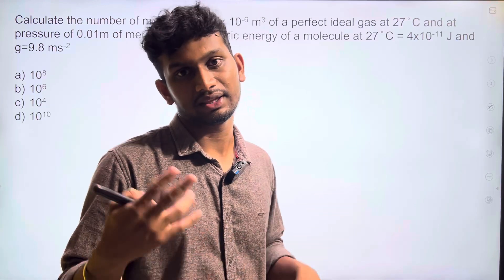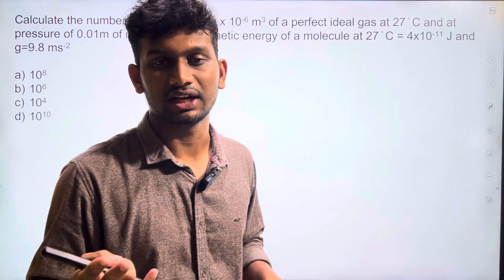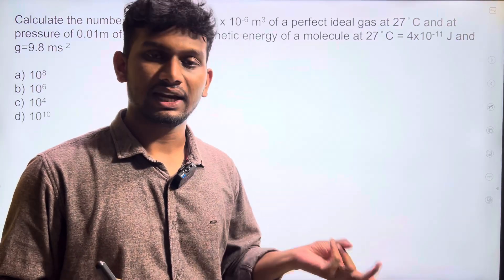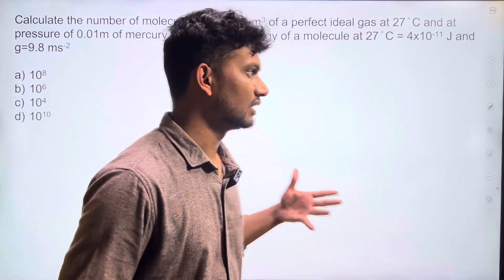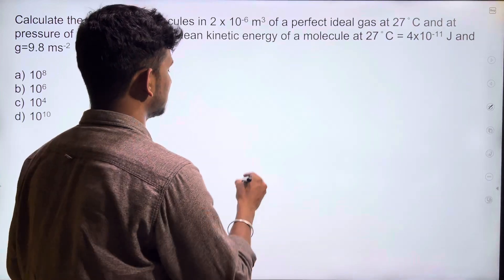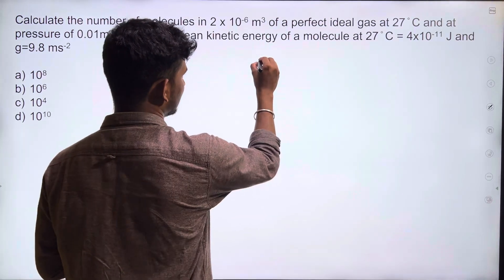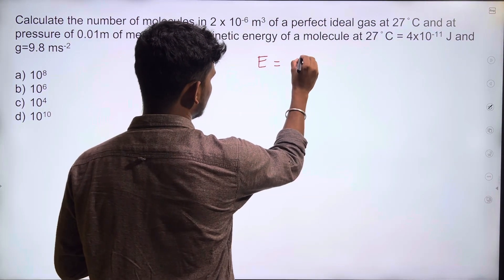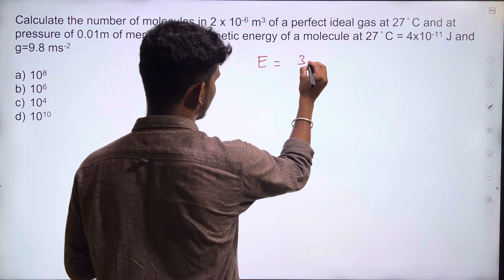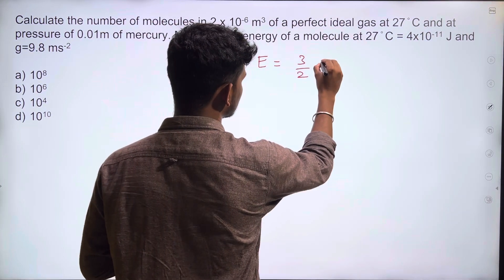In the problem, there are two important terms: kinetic energy and average kinetic energy. Let me explain the formula here. E is equal to 3/2 PV.